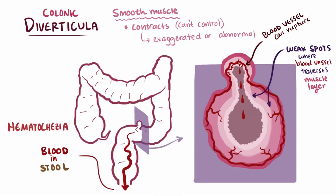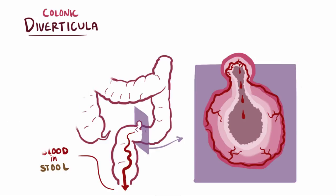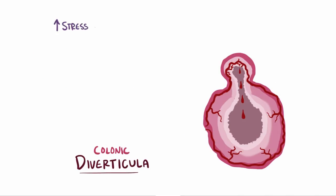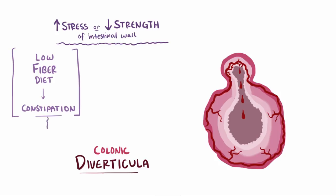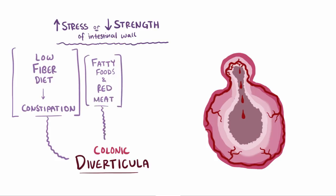This is known as hematochesia, or rectal bleeding, but this bleeding is usually painless. Other associations with diverticula include things that either increase the stress on the walls of the intestine or decrease the strength of the intestinal walls. Fiber helps stool move more easily through the colon, so diets low in fiber can lead to constipation and make it harder for the colon to move small, hard stool. Dietary fiber is associated with a decreased risk of symptomatic diverticular disease, and on the flip side, a diet high in fatty foods and red meat is associated with an increased risk of symptomatic diverticular disease.